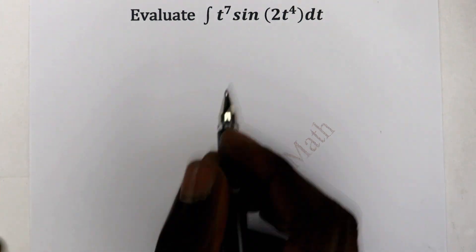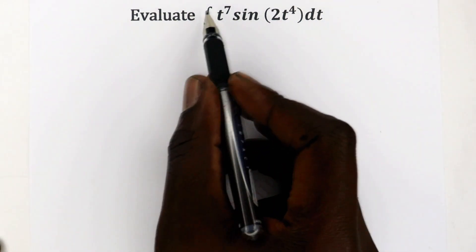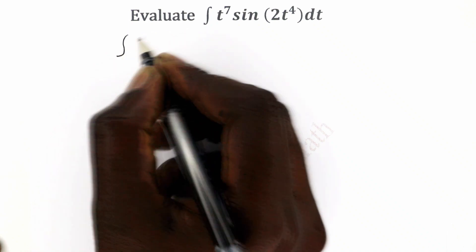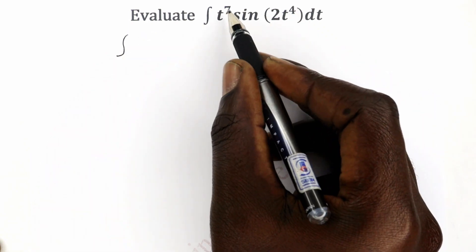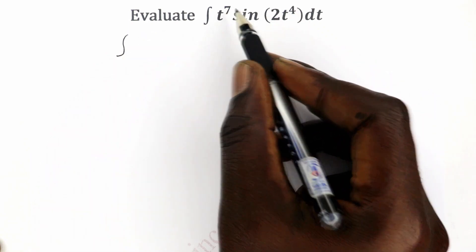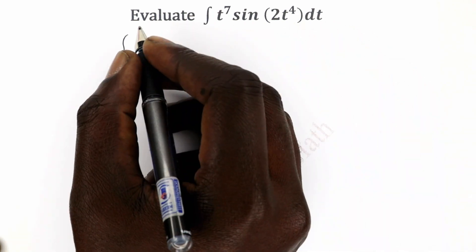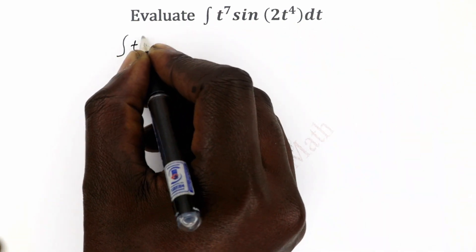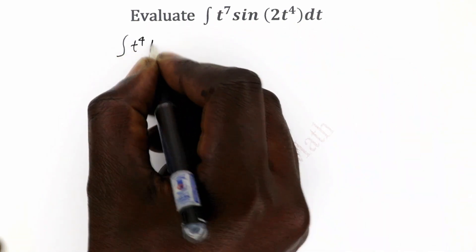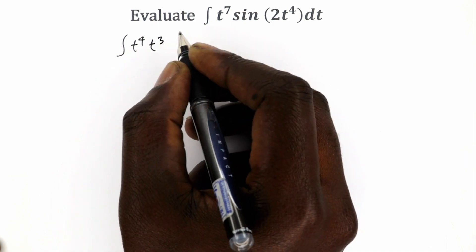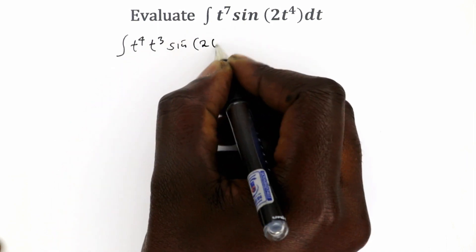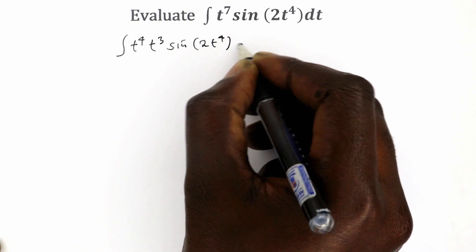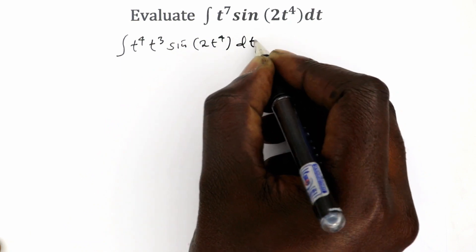The first thing we want to do is just rewrite this integral. Since we have t^4, we can also write t^7 as t^4 times t^3. So we want to have t^4 times t^3 sine of 2t^4 with respect to t.